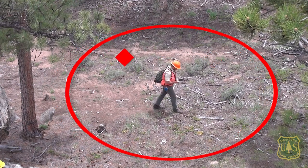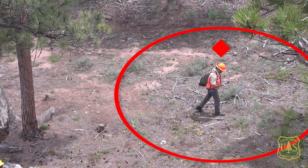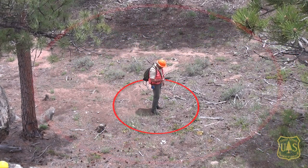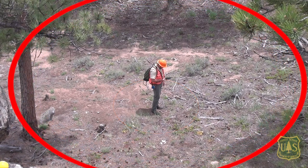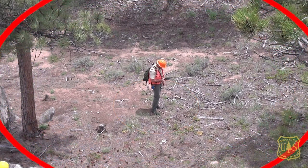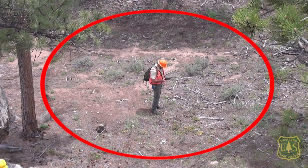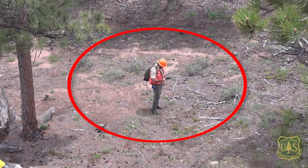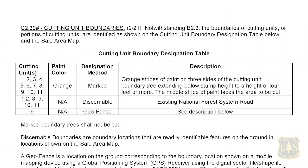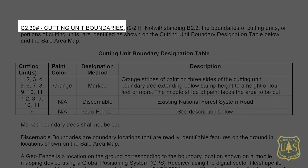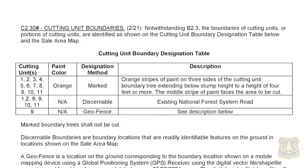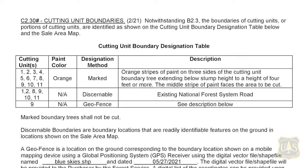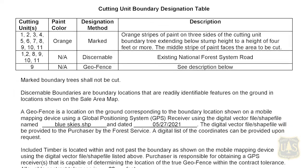With different GPS receivers having different levels of accuracy error, ranging from 2 feet for expensive models to 50-plus feet for inexpensive recreational models, the acceptable level of accuracy error needs to be determined before any work can begin in units using geofence. The allowable contract tolerance is defined in the contract provision C2.30, cutting unit boundaries. The allowable contract tolerance defines the level of accuracy error permitted when working along a geofence.